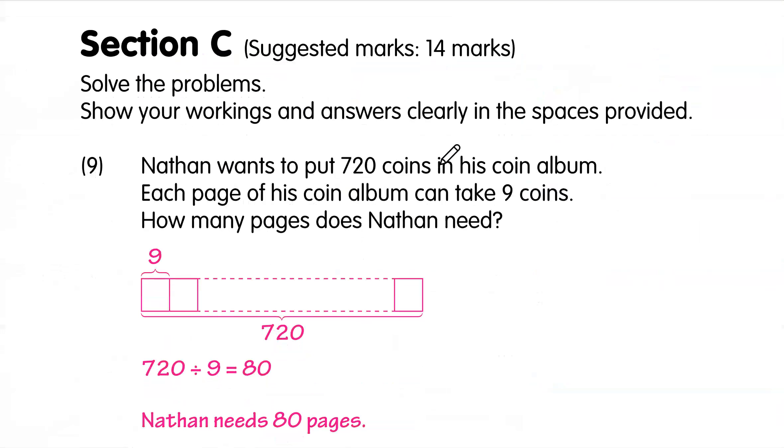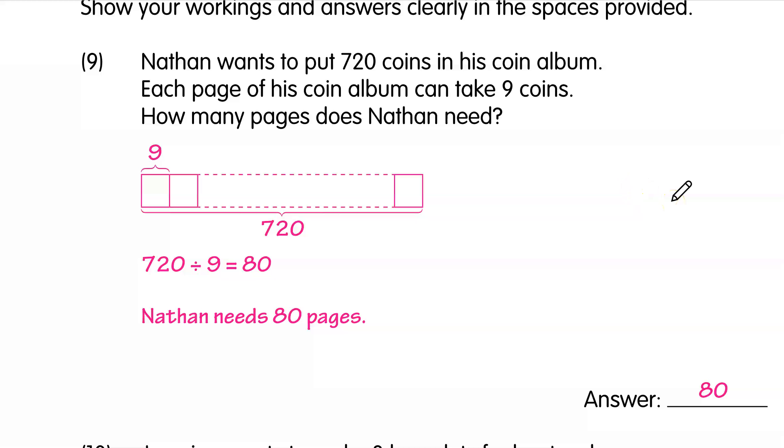Number 9. Nathan wants to put 720 coins in his coin album. Each page of his coin album can take only 9. One page takes 9, another page takes 9, and so on. All you have to do is find how many pages, how many of these pages or boxes, take 720 divide by 9, which is 80. 720 looks like 72 divide by 9 gives you 8. So if you have 720 divide by 9, gives you 80.